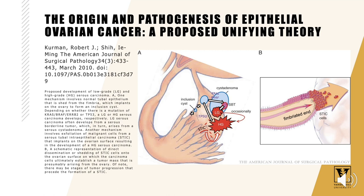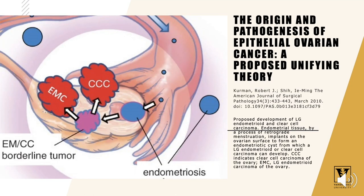If there is a P53 mutation associated with that, it develops into the so-called STIC lesion — serous tubal intraepithelial carcinoma. These shed into the ovary, versus a different pattern when there are KRAS or BRAF mutations developing into borderline tumors and low-grade serous carcinomas. There are also theories about the development of endometrioid cancer and clear cell cancers from endometriotic implants.